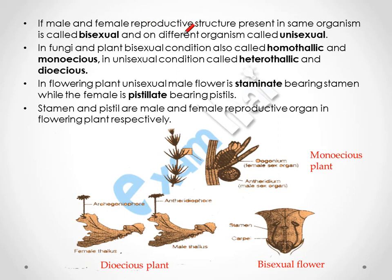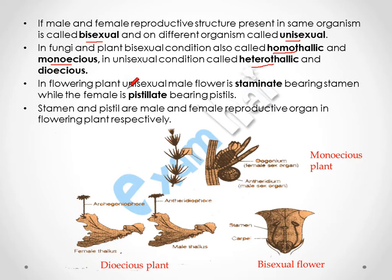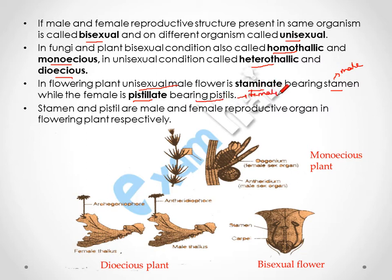If male and female reproductive structures are present in the same organism, it is called bisexual; if present in different organisms, it is called unisexual. In fungi and plants, the bisexual condition is called homothallic and monoecious respectively, while the unisexual condition is called heterothallic and dioecious. In flowering plants, the unisexual male flower is called staminate (bearing stamen) and the female is called pistillate (bearing pistil).